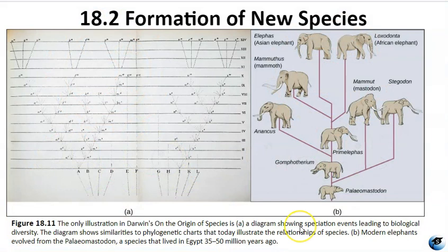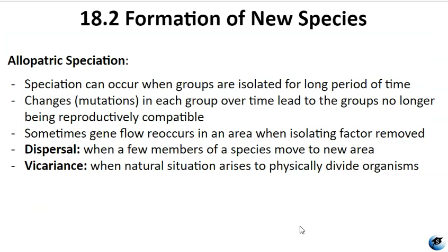Allopatric speciation occurs when populations become geographically discontinuous, impeding the flow of alleles. Over time, the separated populations experience different environmental conditions, and natural selection favors divergent adaptations, leading to gradual changes in allele frequencies. Geographic isolation can occur through various means, such as the formation of rivers, erosion creating new valleys, or organisms migrating to new locations without the ability to return. Biologists categorize allopatric processes as either dispersal — a few individuals moving to a new geographic area — or vicariance, which occurs when natural circumstances physically divide organisms.